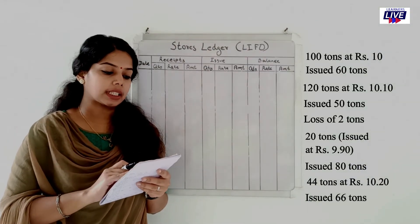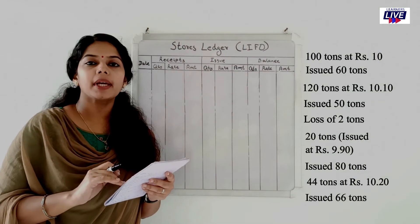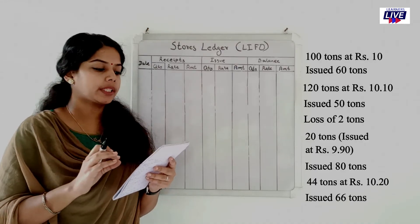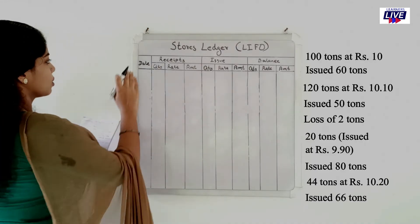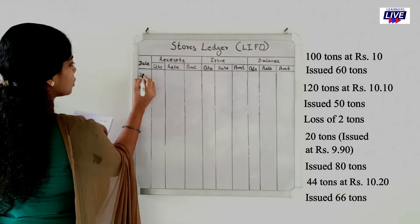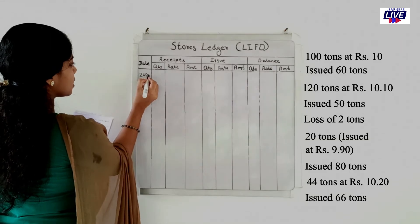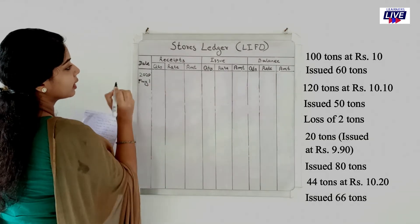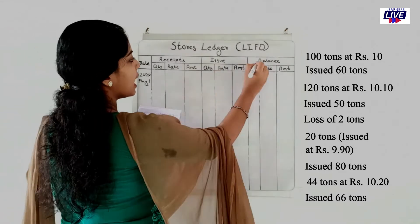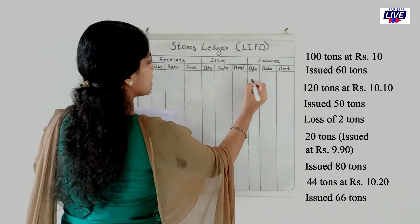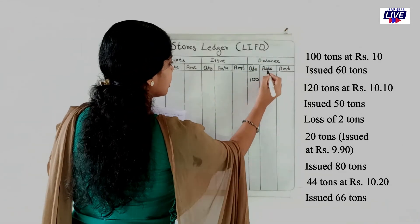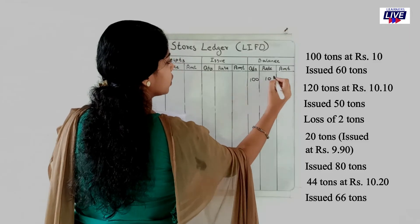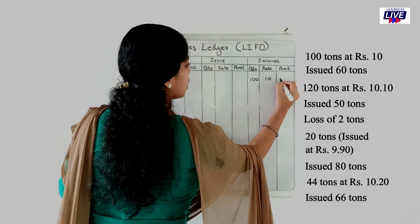Opening balance on 2020 May 1: quantity 100 tons at the rate of 10 rupees, amount 1000.